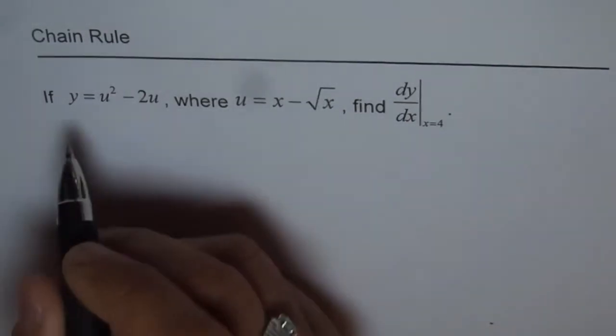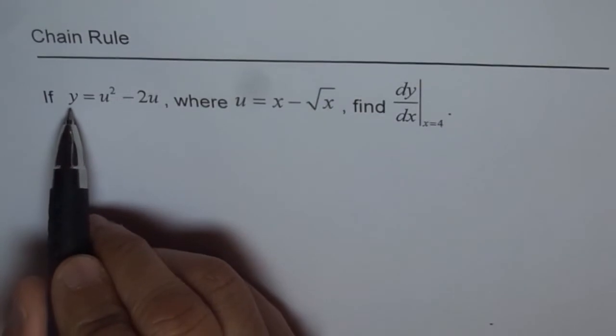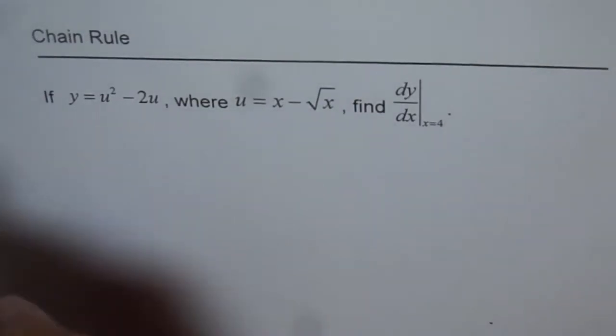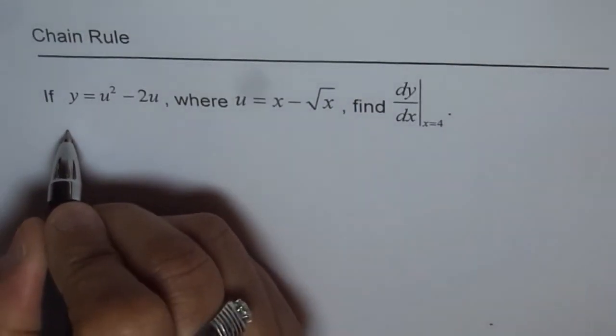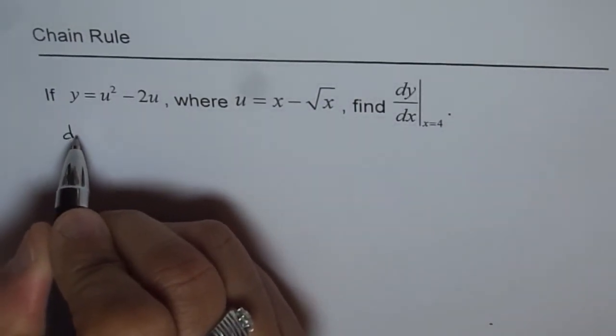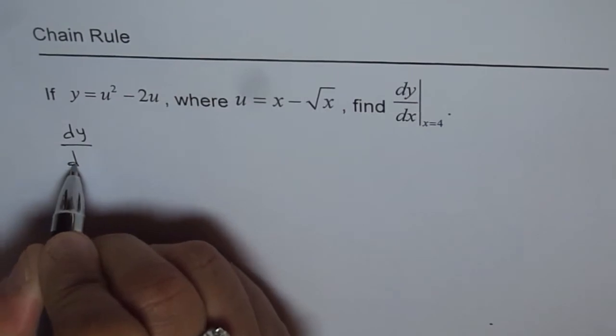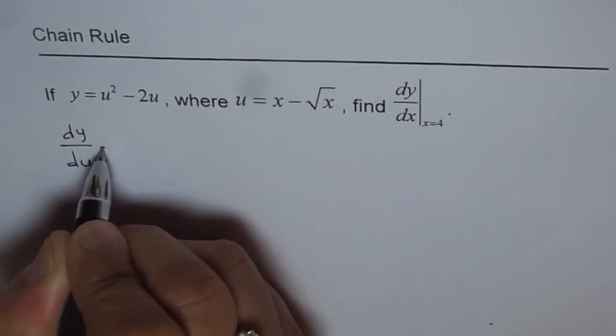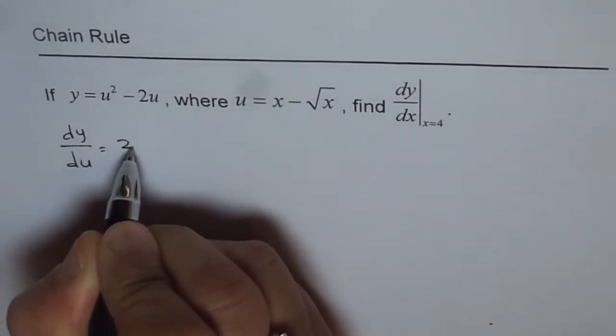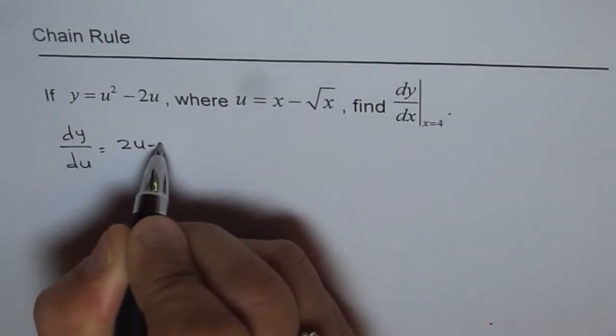Let's find the first derivative of y with respect to u. Applying the power rule, we get dy/du equals 2u minus 2.